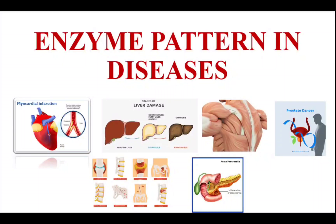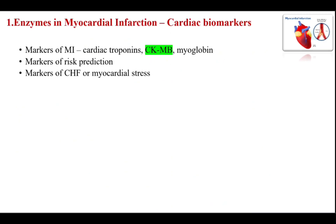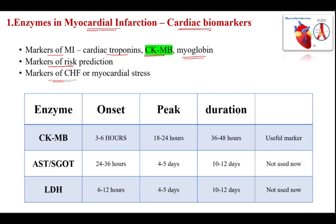Hello everyone. Today the topic is enzyme patterns in diseases. First, enzymes in myocardial infarction, also called cardiac biomarkers. Markers of MI are cardiac troponins, CKMB (creatine kinase MB), and myoglobin. These are the markers of risk prediction and markers of CHF or myocardial stress. CKMB, that is creatine kinase muscle-brain subunit: